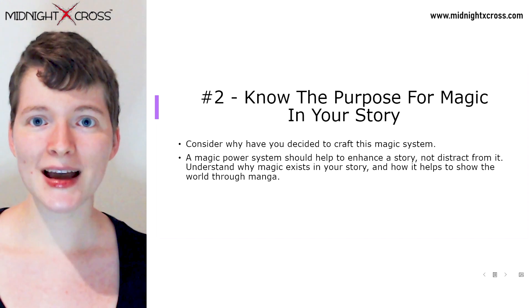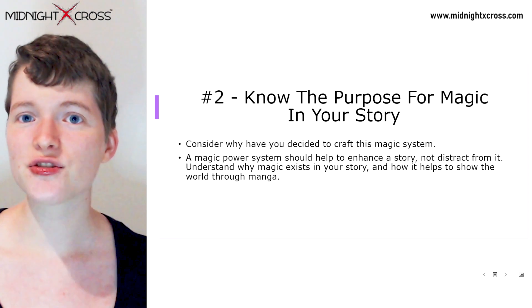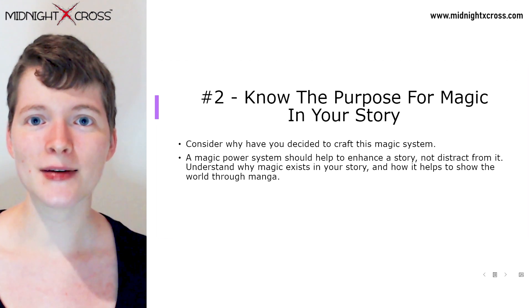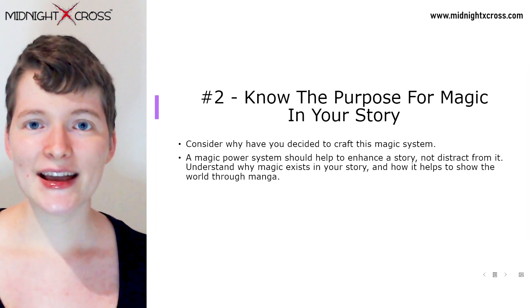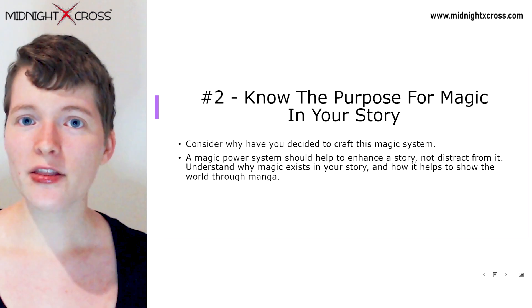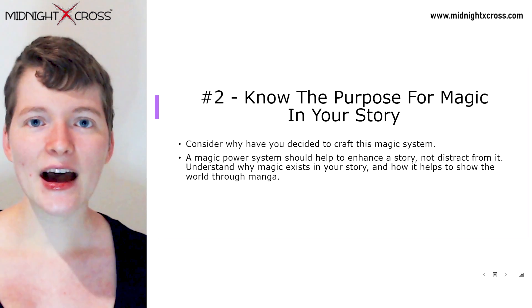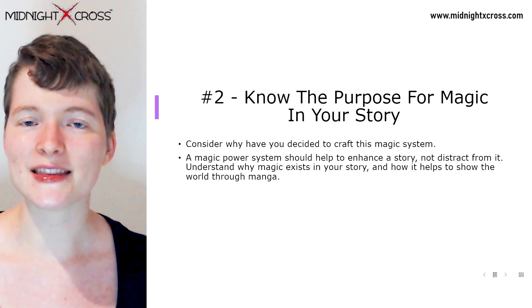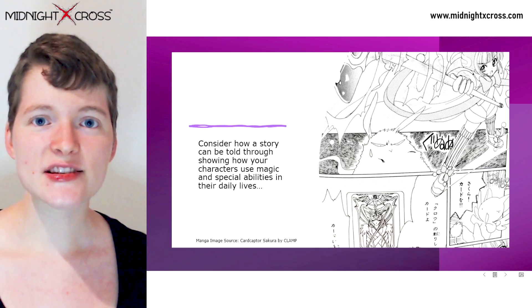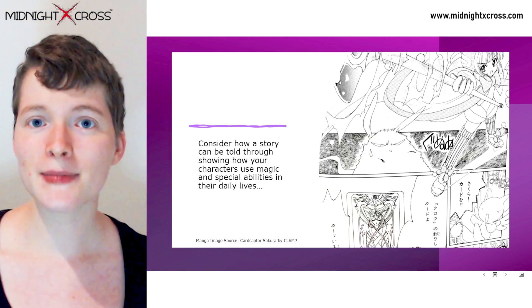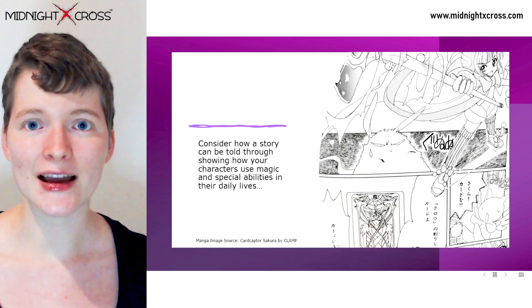Number two: know the purpose for magic in your story. Consider why you have decided to craft this magic system and the purpose of it in telling your manga or novel. A magic power system should help to enhance a story and not distract from it. Understand why the magic exists in your story and how you can use those magical abilities to show the world and the characters in your manga. Whether your character is a magical girl who needs to transform to save the day or someone who uses magical abilities in their daily lives, consider how you should present that magical system in a way that makes sense for the characters within your story.